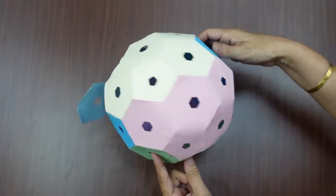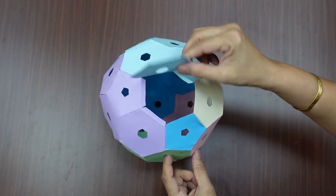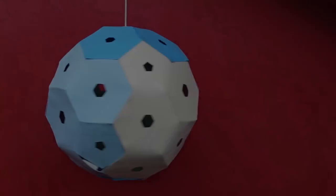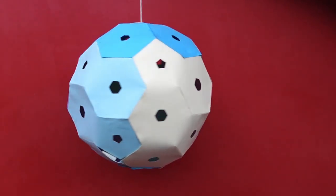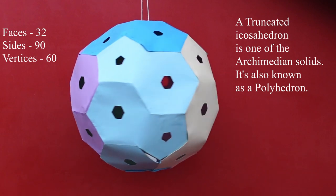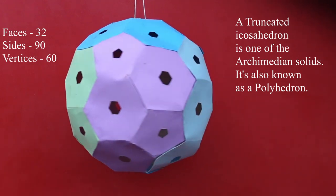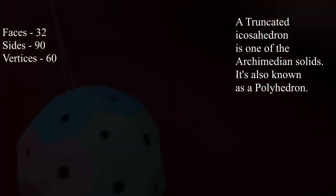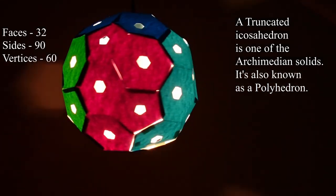When all the flaps are joined to the side flaps we see the truncated icosahedron formed. This truncated icosahedron has 32 faces, 90 sides and 60 vertices. It is a polyhedron.